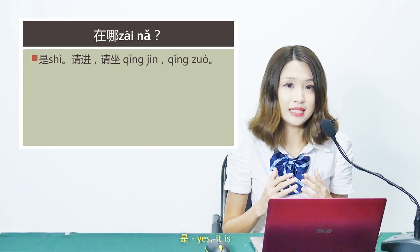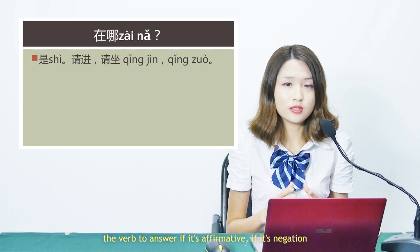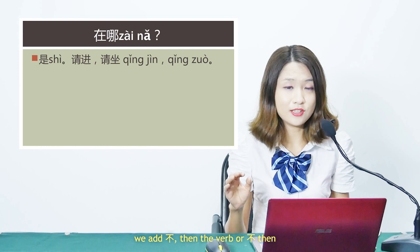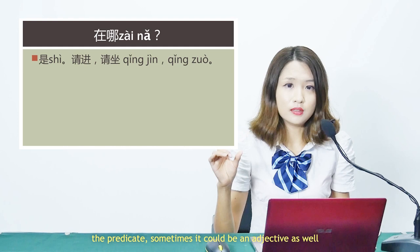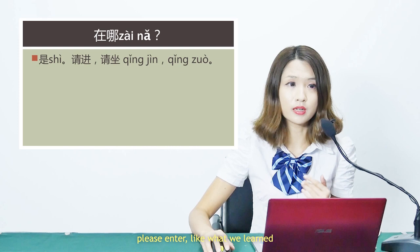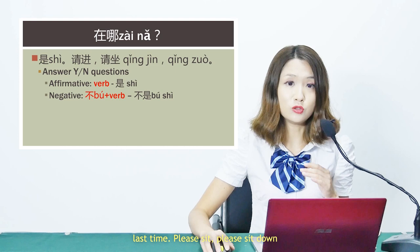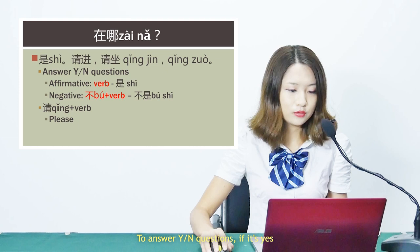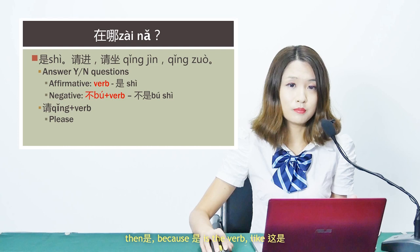下一句 — next sentence. 是 would be yes. In Chinese, we usually don't say yes or no — we use the verb to answer affirmatively, and for negation we add 不 before the verb or predicate, which can sometimes also be an adjective. 请进 — please enter, like what we learned last time. 请坐 — please sit down.